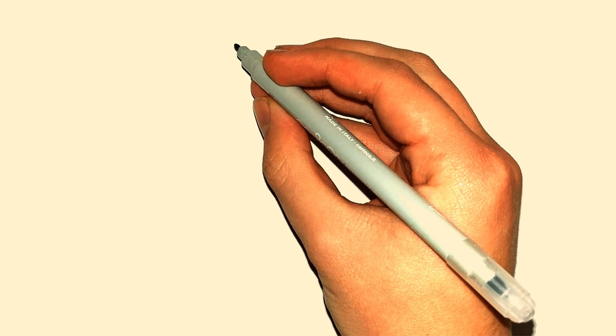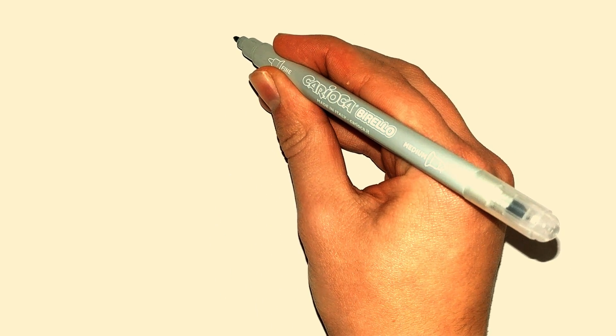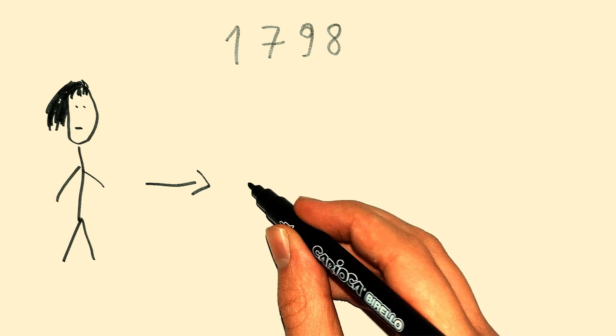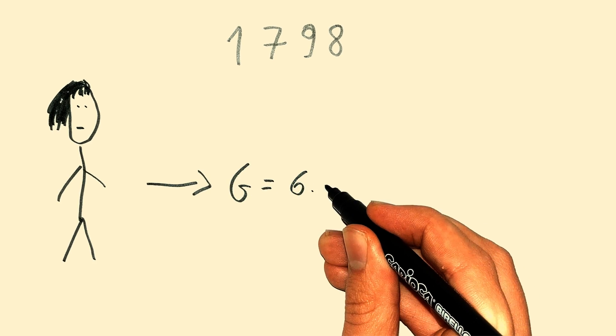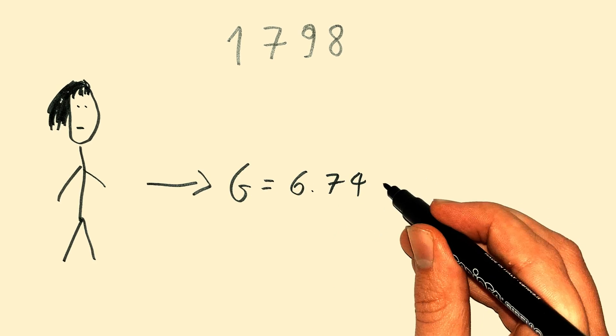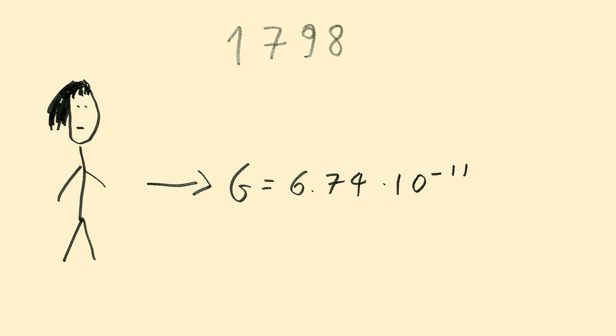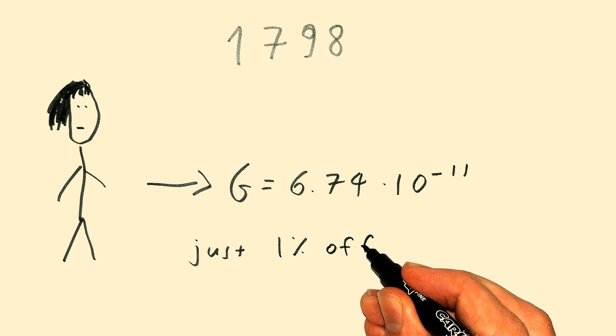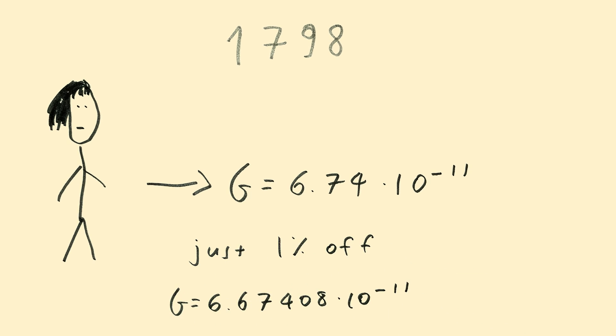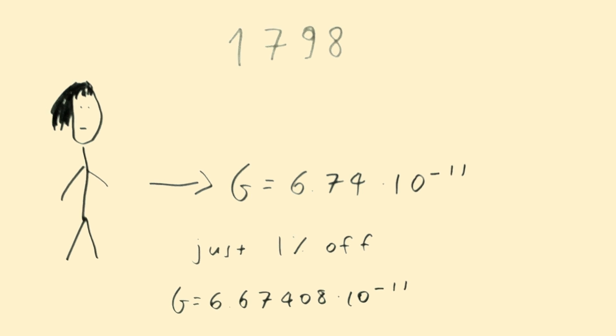The classic experiment, which gave significant insight to G's value, goes back to 1798 and it was performed by Henry Cavendish and concluded that G is equal to 6.754 x 10^-11, which is just 1% off the currently accepted value. 1%. That's the progress we managed to do after 200 years.